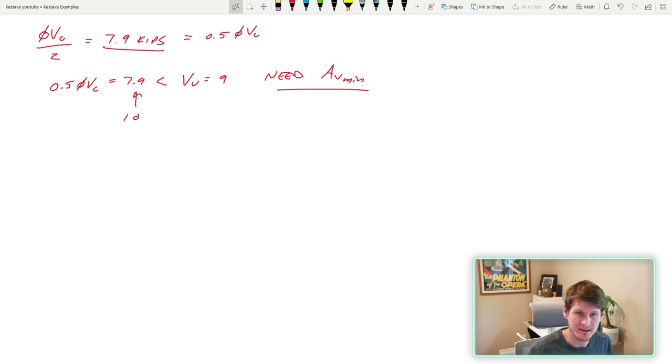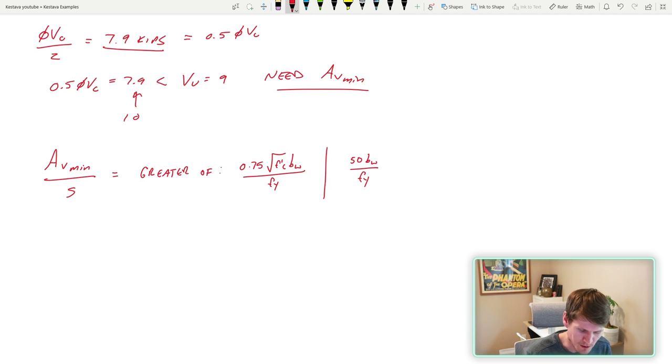Well, what is AV min? How do we calculate that? AV min over S equals the following: the greater of two options, 0.75 square root f'c base width over fy, and 50 base width over fy. Now a little note here, a little speedy fun fact as I was studying. If your f'c is less than 4,444 psi, then you will use this guy right here. That's the threshold, that's the cutoff of comparing the two is dependent upon the strength of your concrete. Make sure you're going through the process, checking both and taking the greater value.